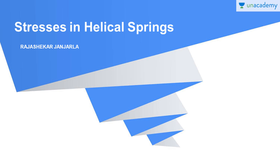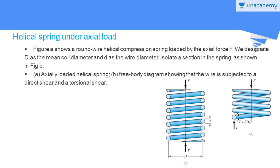Welcome again to stresses in helical springs — helical spring under axial load. Figure A shows a round-wire helical compression spring loaded by the axial force F. We designate D as the mean coil diameter and small d as the wire diameter. We isolate a section in the spring as shown in the figure. Here, small d is the diameter of the spring wire and capital D is the mean coil diameter of the helical spring.